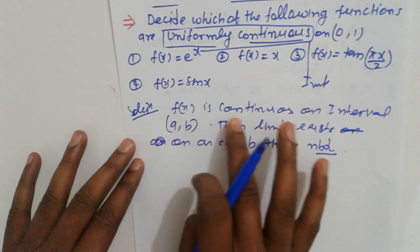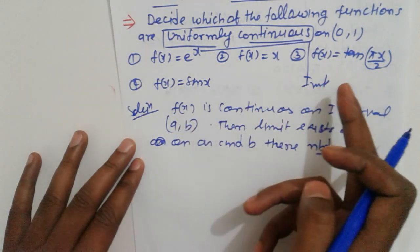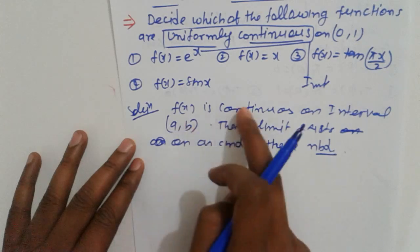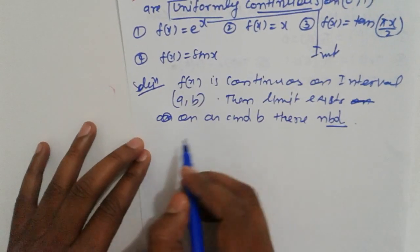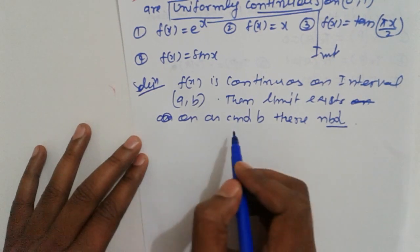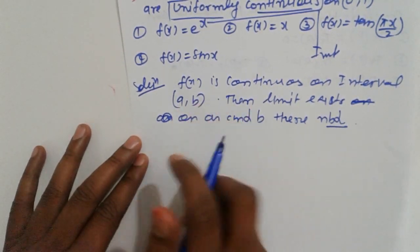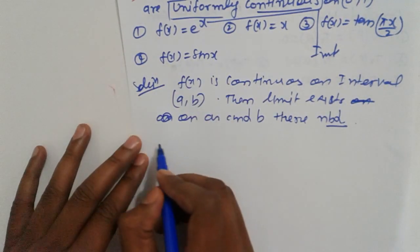That is the general method to check. First, we'll check if the limits exist or not at both endpoints a and b.